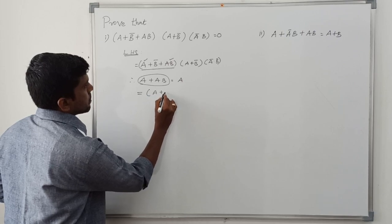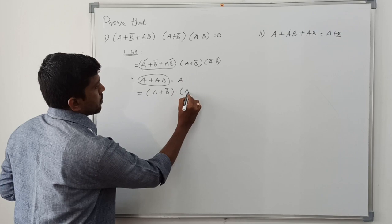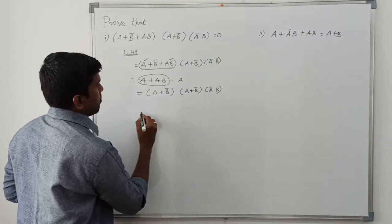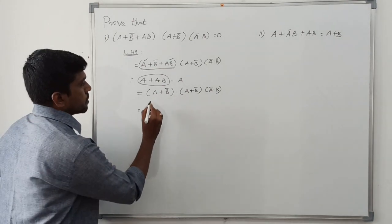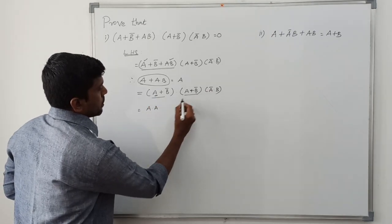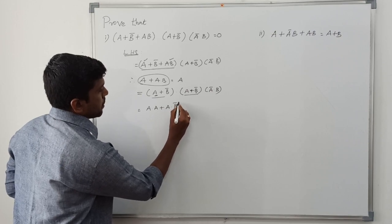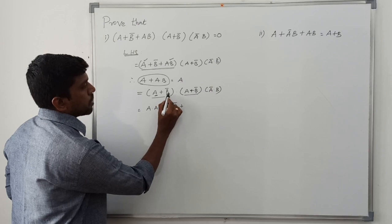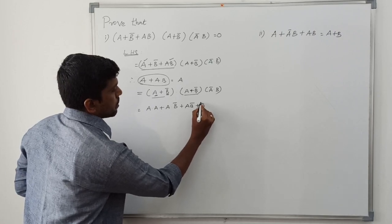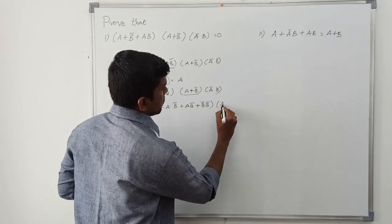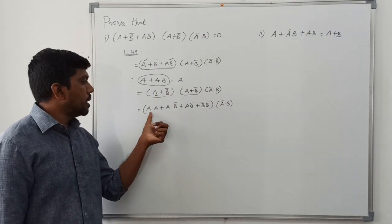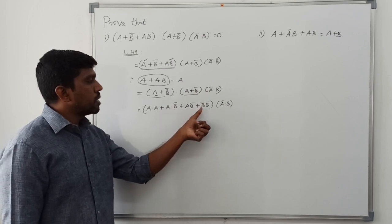So the expression becomes (a + b̄)(a + b̄), then multiplied by (ā·b). I multiply these two terms (a + b̄)(a + b̄) together. After expanding, you get the boolean expression: a·a + a·b̄ + a·b̄ + b̄·b.